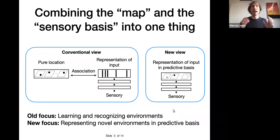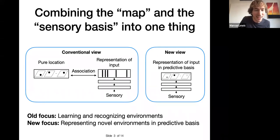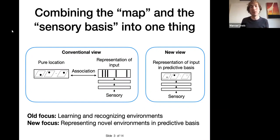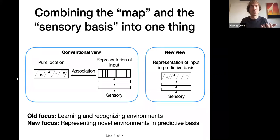On the left, the task framing is learning, recognizing, and predicting in learned environments. With the view on the right, I'm taking on representing novel environments and being able to predict in novel environments. And of course, you can substitute environments with objects, etc.